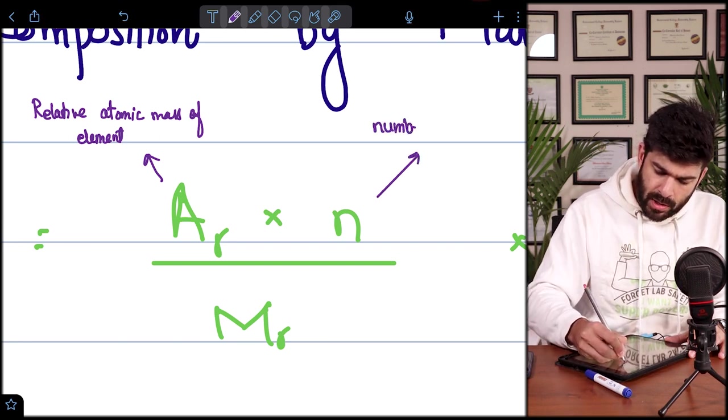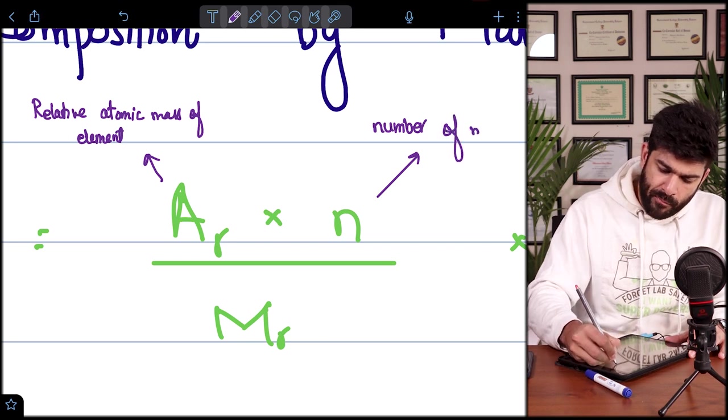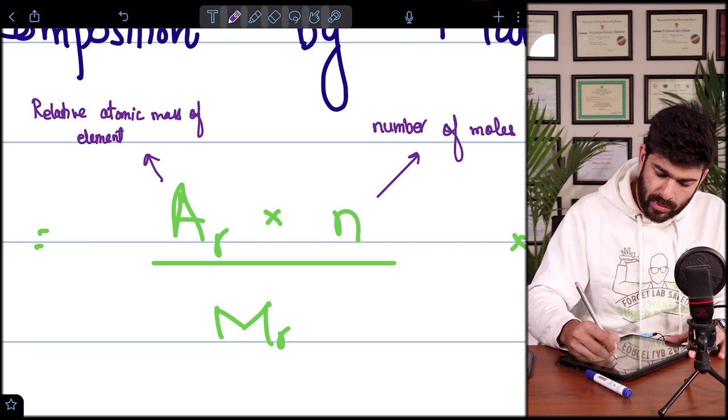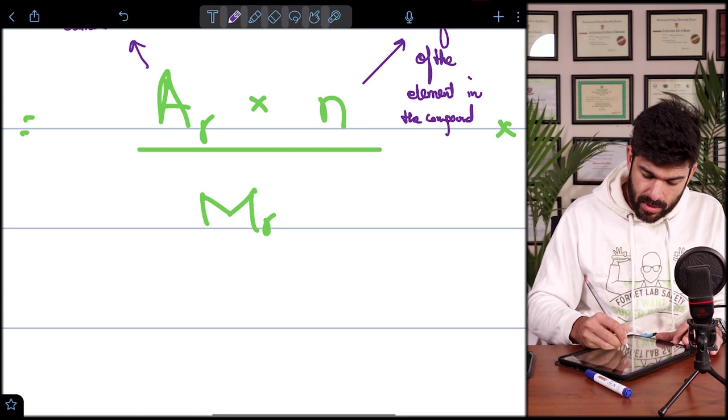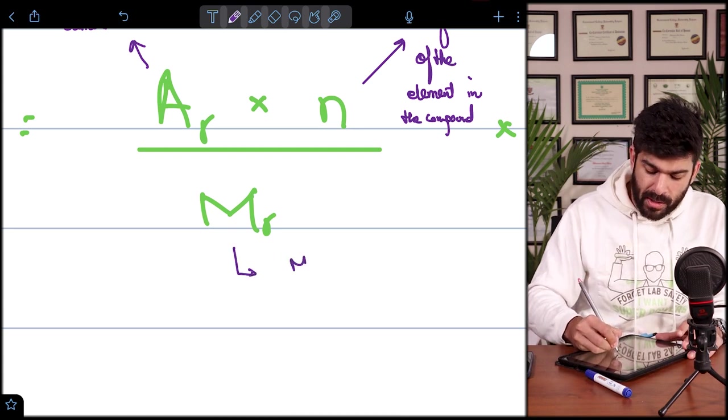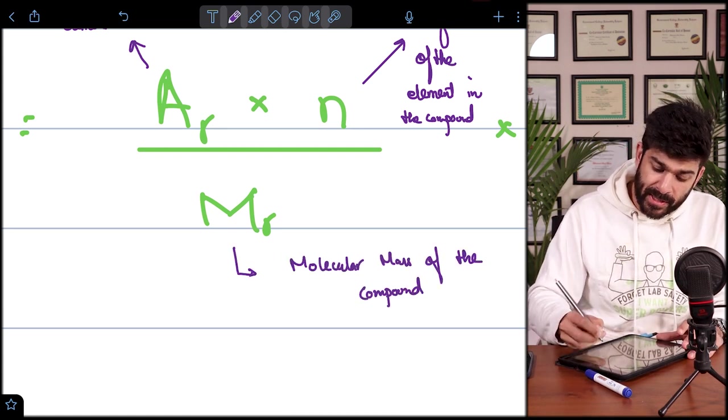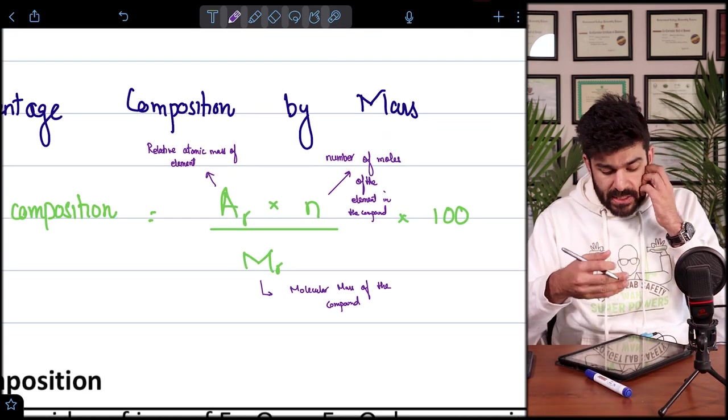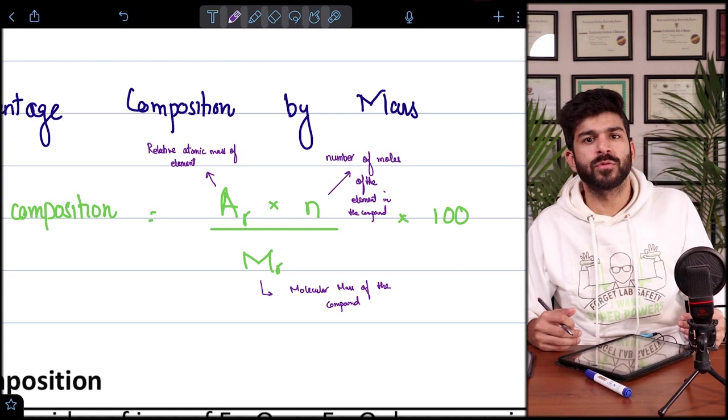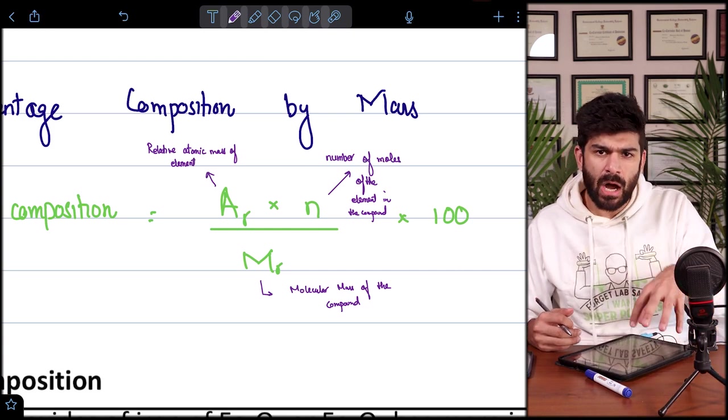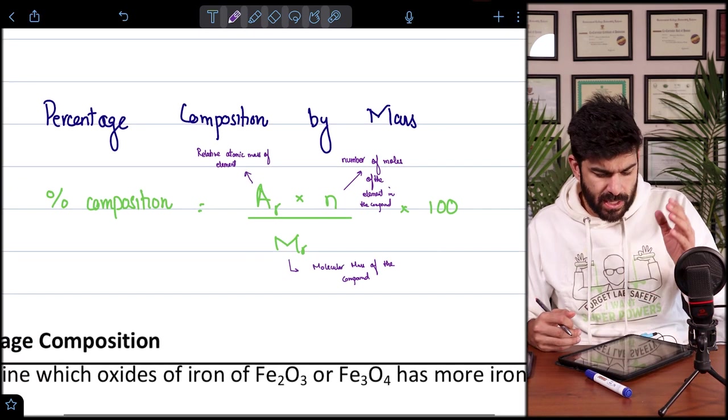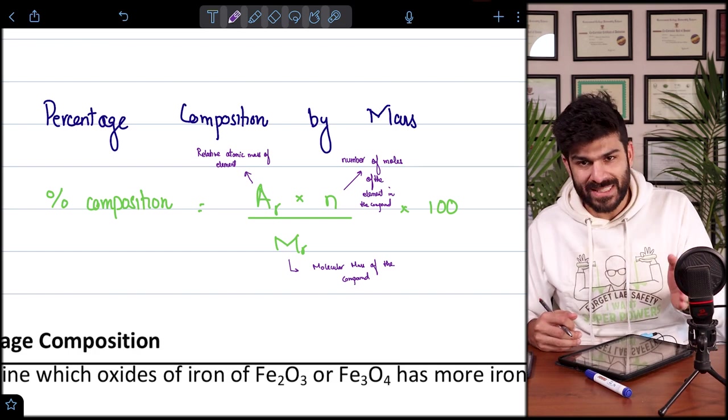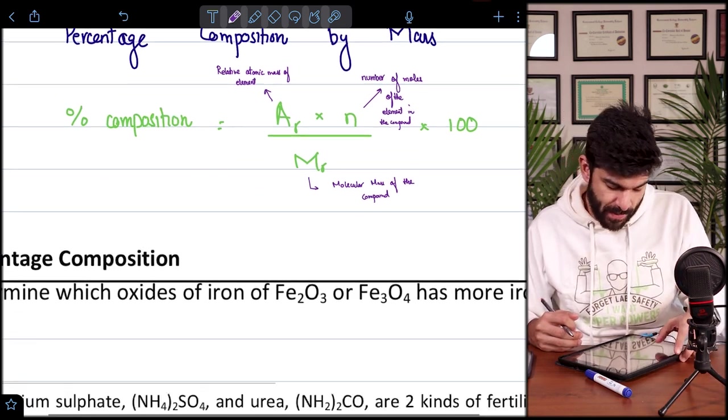So now, let's quickly break it down. What is the AR? AR is the relative atomic mass of element under consideration. N is the number of moles of that element in the compound. And MR is the molecular mass of the compound. And then, since it's a percentage composition formula, you multiply the value by 100. Let's incorporate these values into questions and formulas.